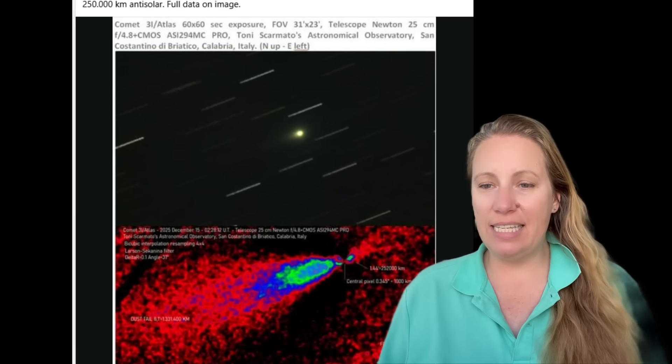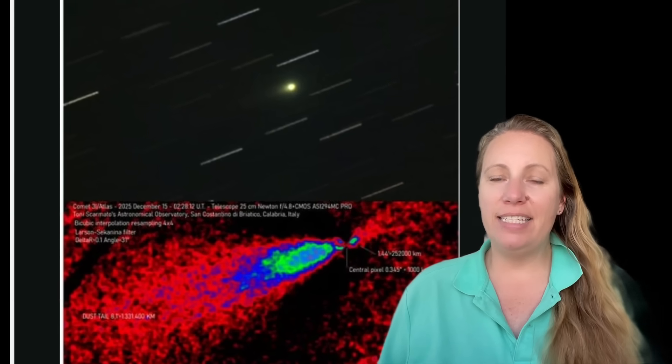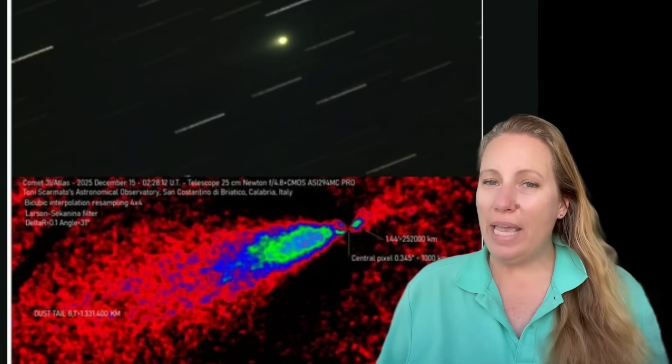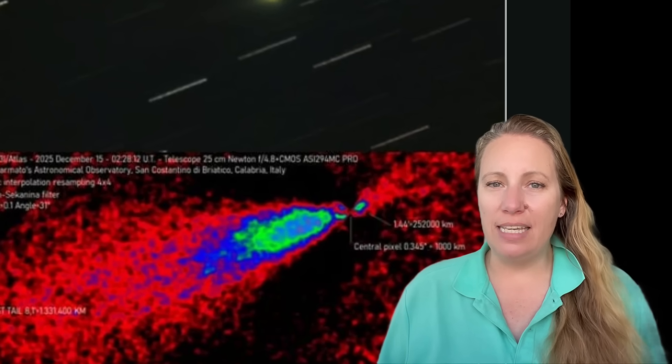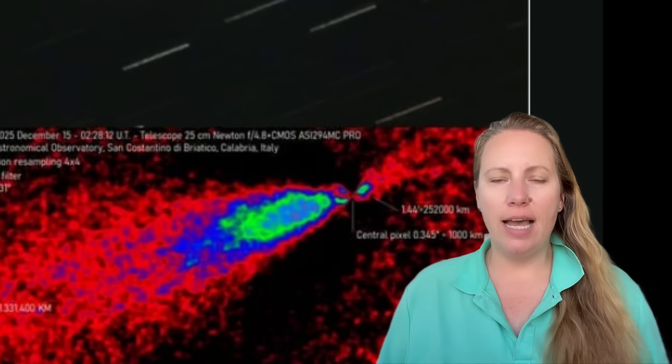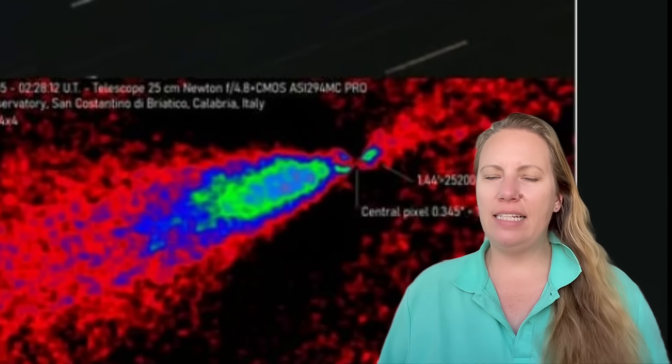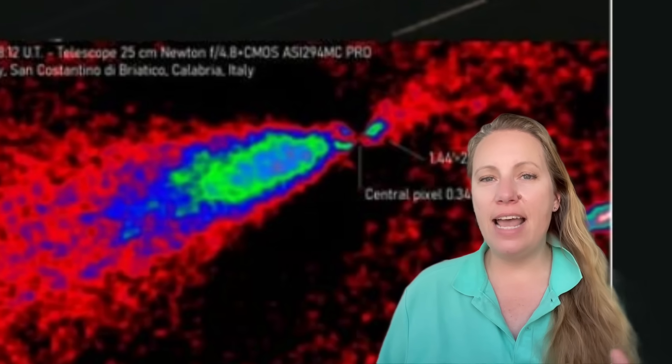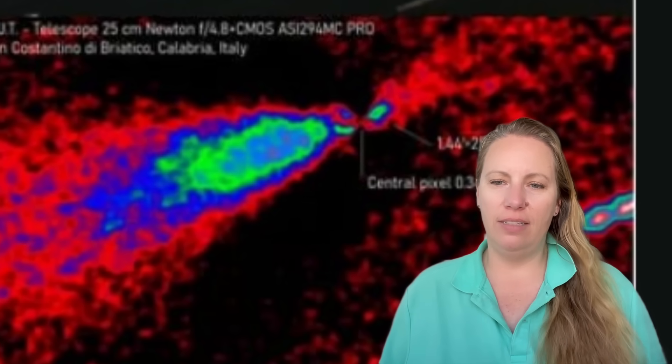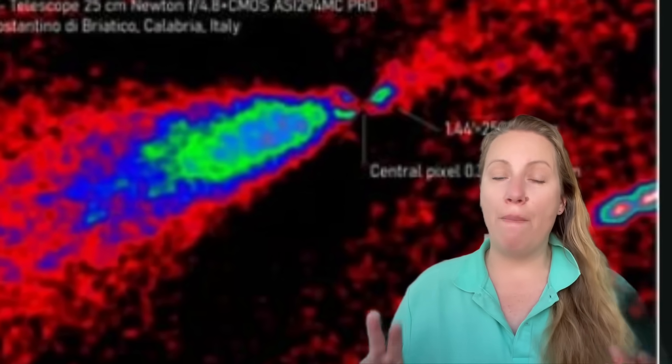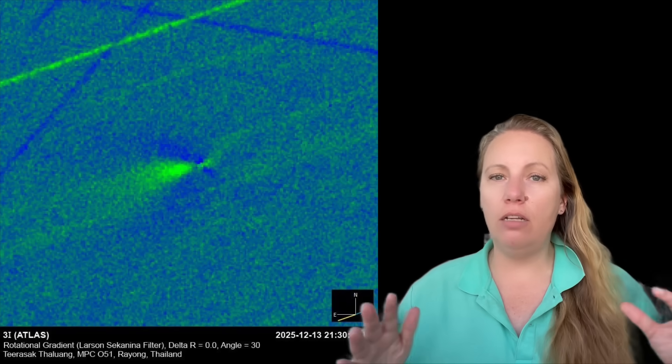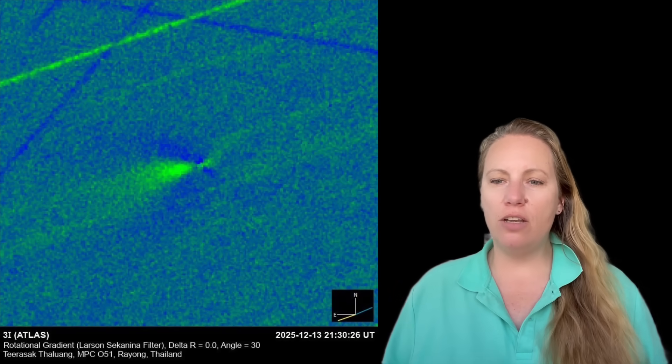We're still seeing the anti-tail, but we have heard just recently, just in the last few days, that 3i Atlas has lost its tail. These claims are wrong. It hasn't lost the anti-tail and it hasn't lost the other tail. All these dramatic news that this has suddenly vanished, it's not true.